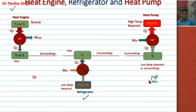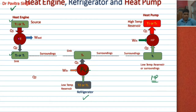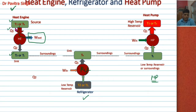First we will discuss about the heat engine. A heat engine is a device which can convert chemical energy into mechanical work or mechanical energy. This is the higher temperature reservoir and this is the low temperature reservoir, or we can say this is the source and this is the sink. This low-grade energy heat is supplied to the heat engine, converted into high-grade mechanical energy partly, and the remaining part of heat Q2 is rejected into the surroundings.